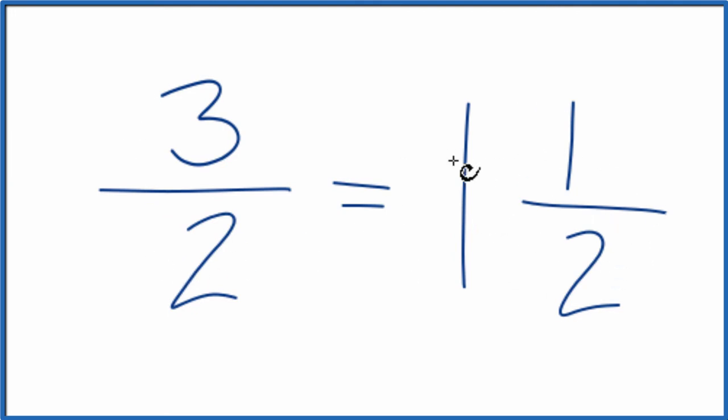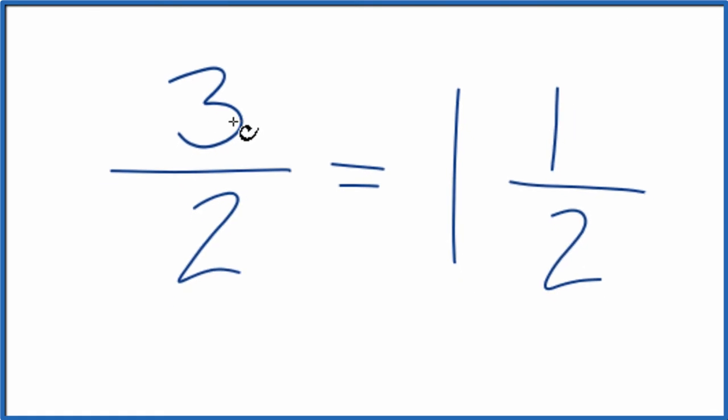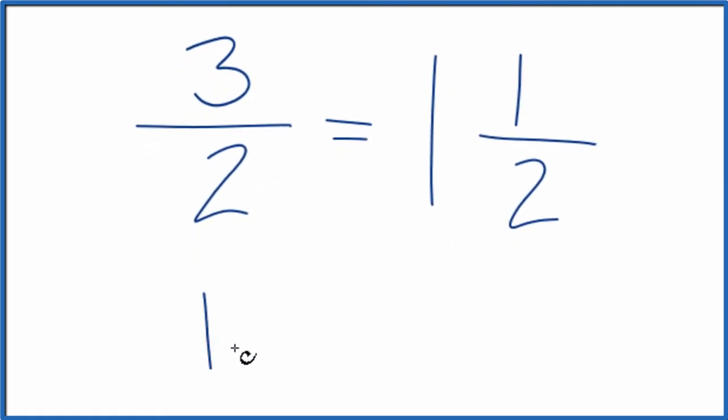If you converted these each to decimal form, you'd find out that 3 over 2 equals 1.5, and 1 and a half equals 1.5. So they're equivalent, just written in different forms.